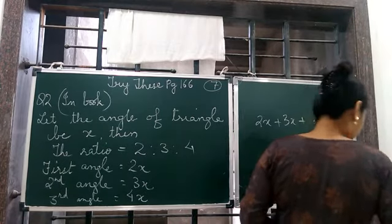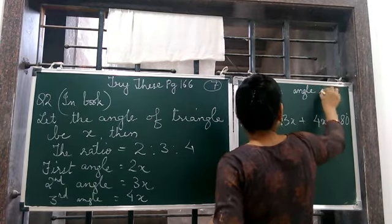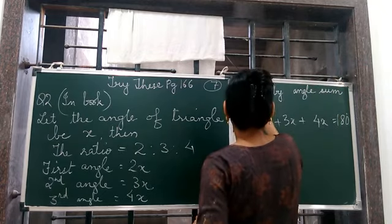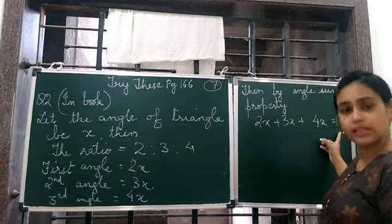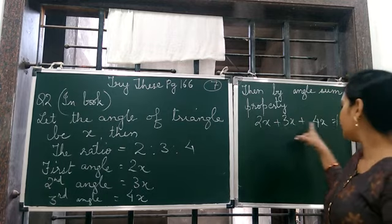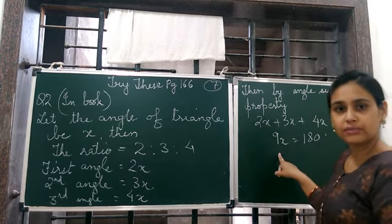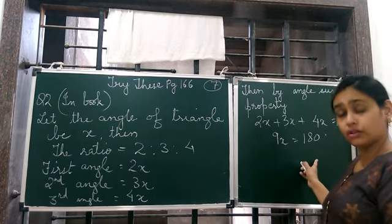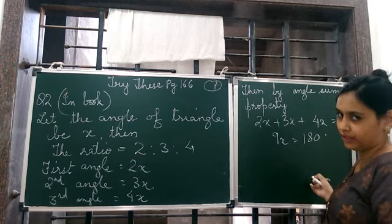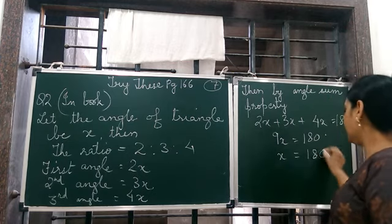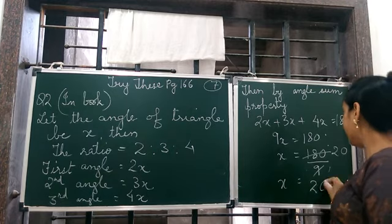2x plus 3x plus 4x is 180 degree. Now, 2 plus 3 is 5, 5 plus 4 is 9. So 9x is equal to 180 degree. Now this 9 will be transposed here. It is in multiplication and it will become division. We can say that we divide both sides by 9. So we cancel this 9 from here and then we divide 180 and 9 here. So the value of x is how much? 20 degree.